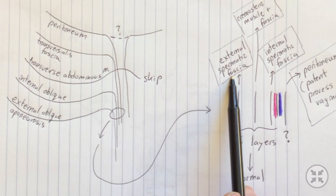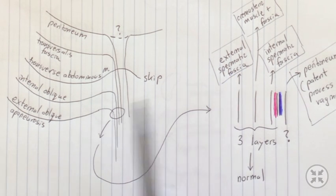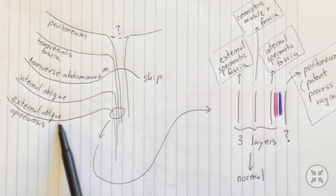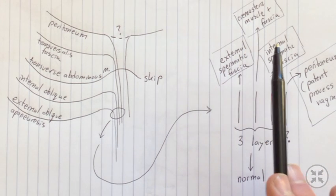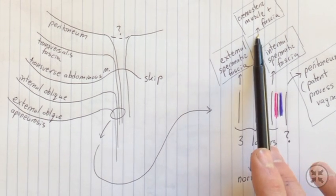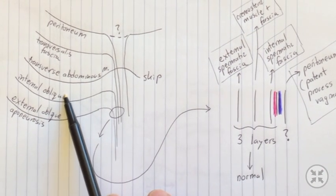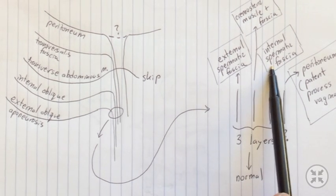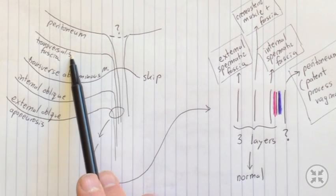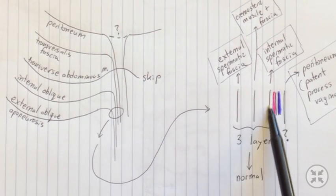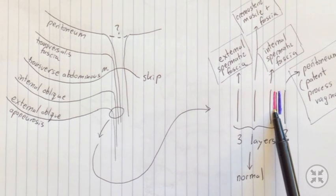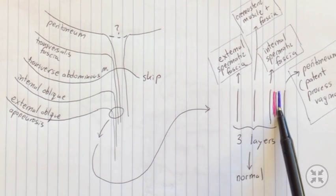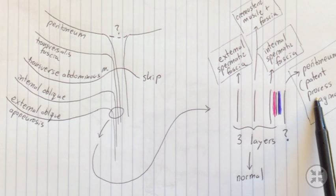The external spermatic fascia actually comes from the external oblique aponeurosis. The cremaster muscle and fascia, remember that muscle that will contribute to the cremasteric reflex, will actually come from the internal oblique. The internal spermatic fascia will come from that transversalis fascia. And then what I've noted here is where the normal presence of the testicular arteries would be, along with the vas deferens. They're not in the peritoneum, notice that.